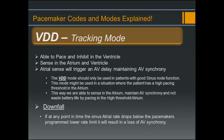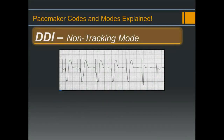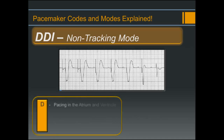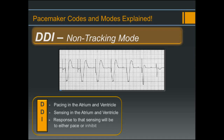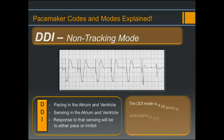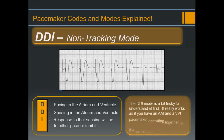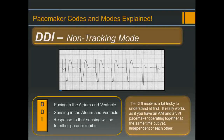Now let's move on to non-tracking modes. DDI: we pace in the atrium and ventricle, sense in the atrium and ventricle, and the response to sensing will be to inhibit. The DDI mode is a bit tricky to understand at first, but it really works as if we have an AAI and a VVI pacemaker operating together at the same time but independent of each other.